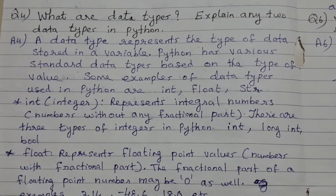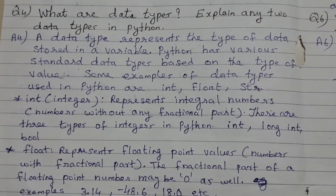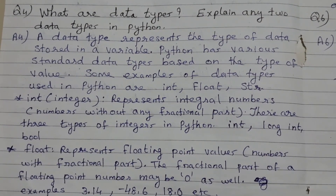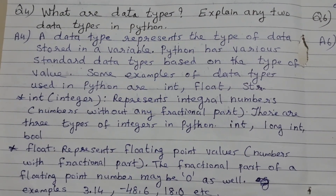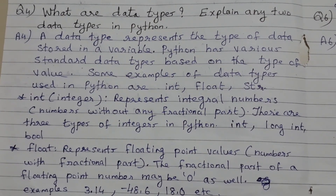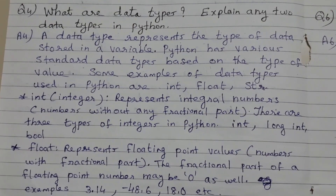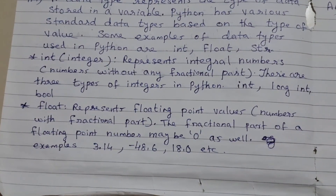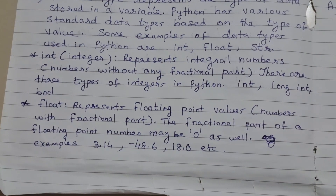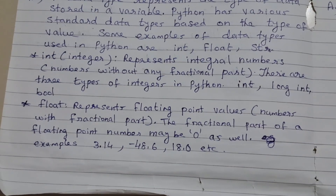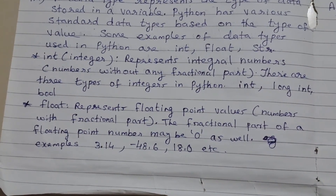What are data types? Explain any two data types in Python. A data type represents the type of data stored in a variable. Python has various standard data types based on the type of value. Some examples are Integer (Int), Float, and String. Integer (Int) represents integral numbers — numbers without any fractional part. There are three types of integers in Python: Int, Long Int, and Boolean.